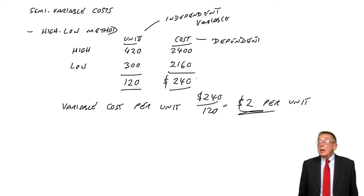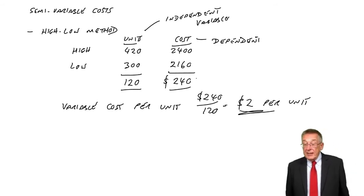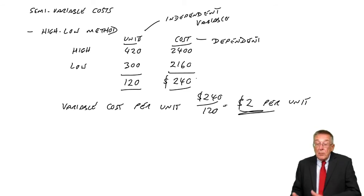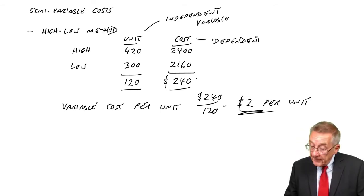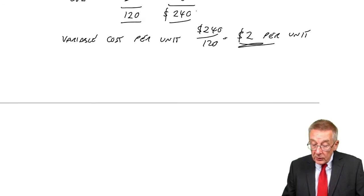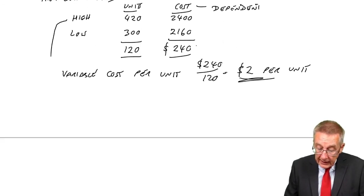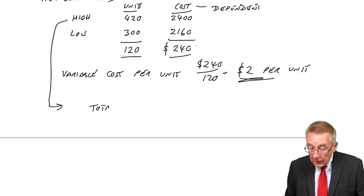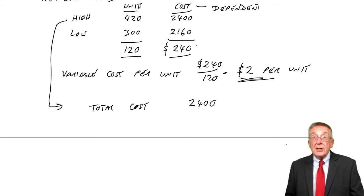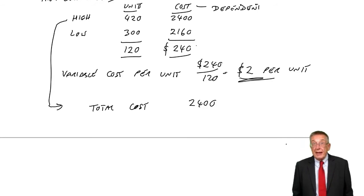We also want to know what the fixed cost per period is. Well, check back to the last section if you need, but go over to either of these two. Doesn't matter whether you go to the high one or the low one. If I go to the high one, we know what the total cost is. Two thousand four hundred. And that's the total of the fixed and the variable.